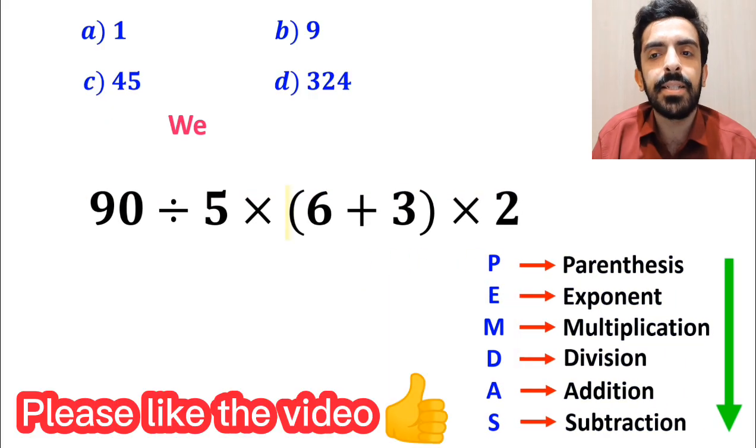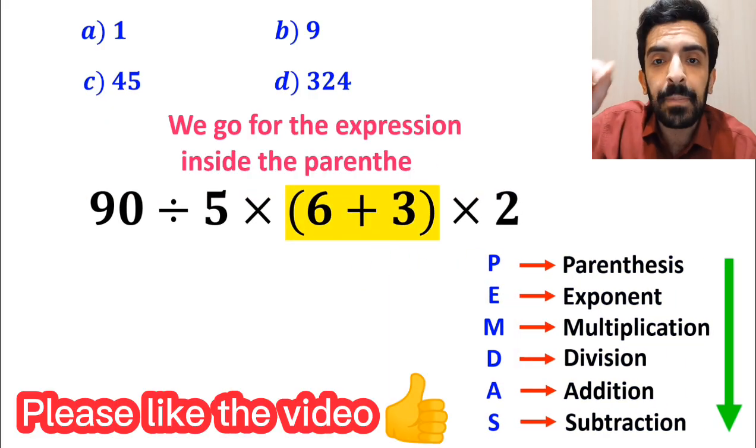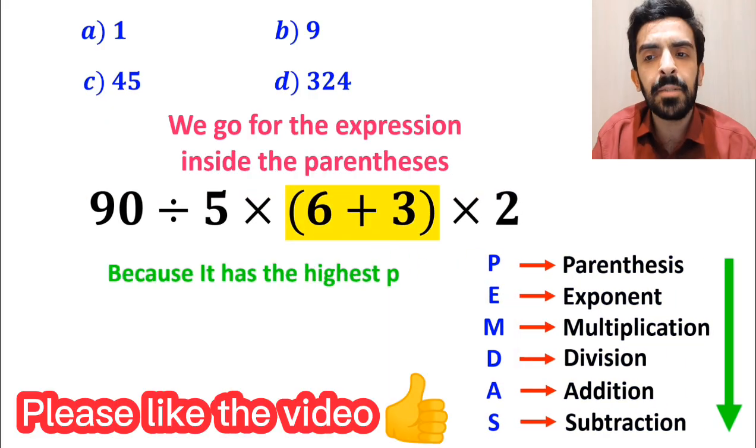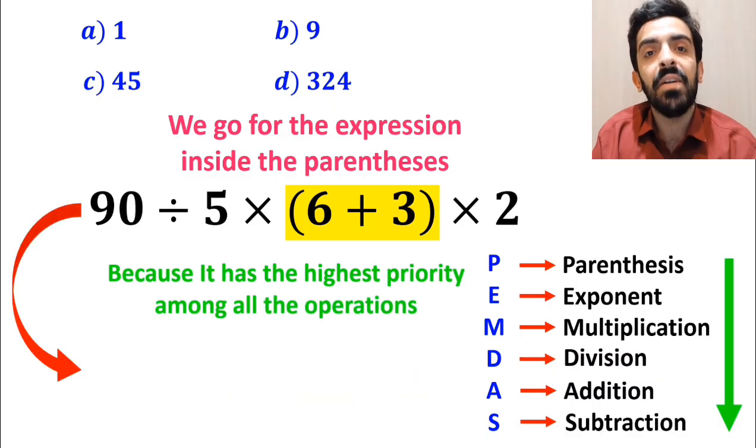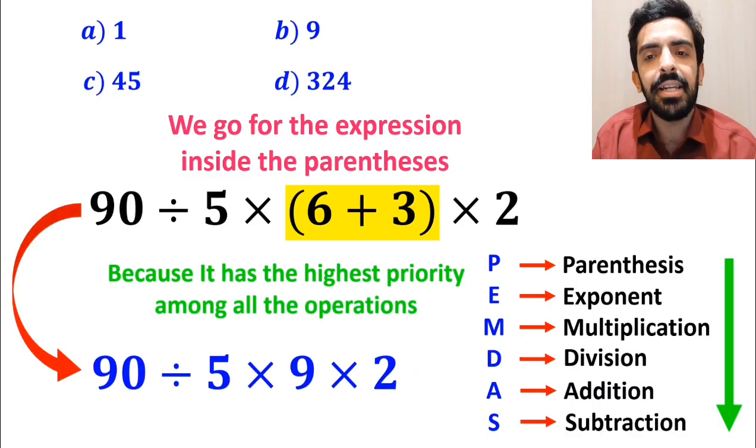Okay, and the first step, we go for the expression inside the parenthesis, because it has the highest priority among all the operations. So instead of this expression, we can write 90 divided by 5 times 9 multiplied by 2.